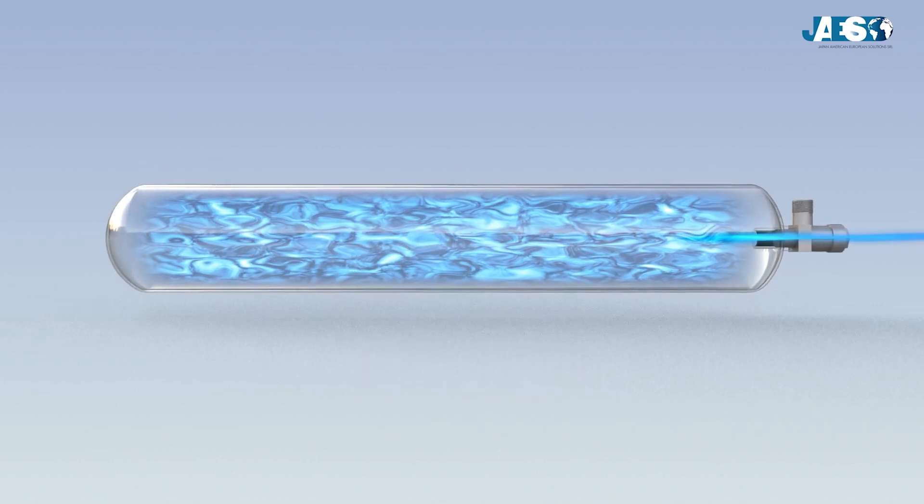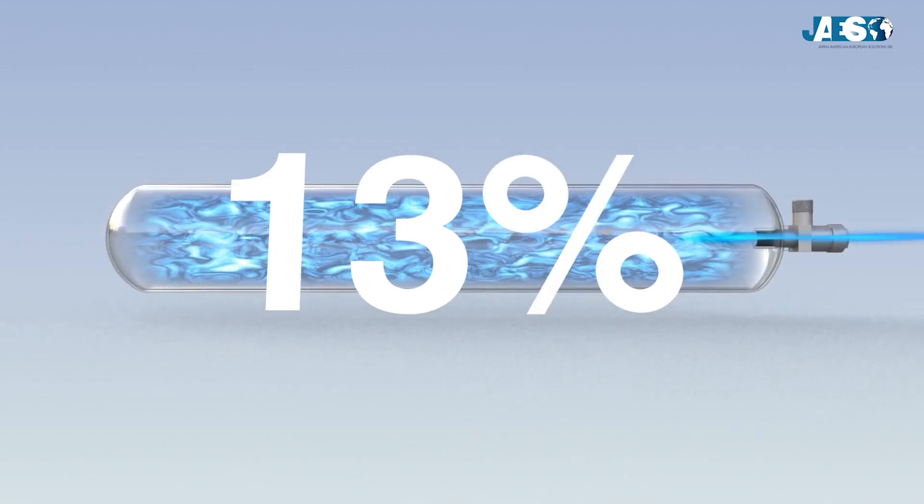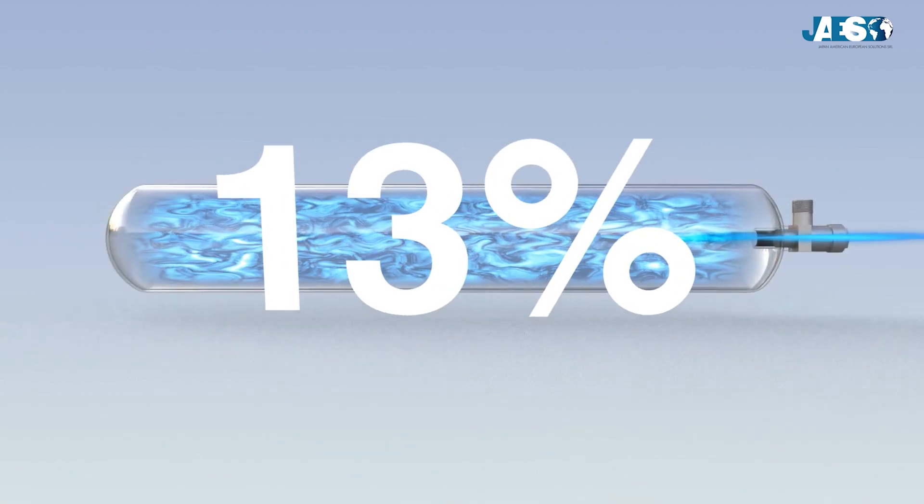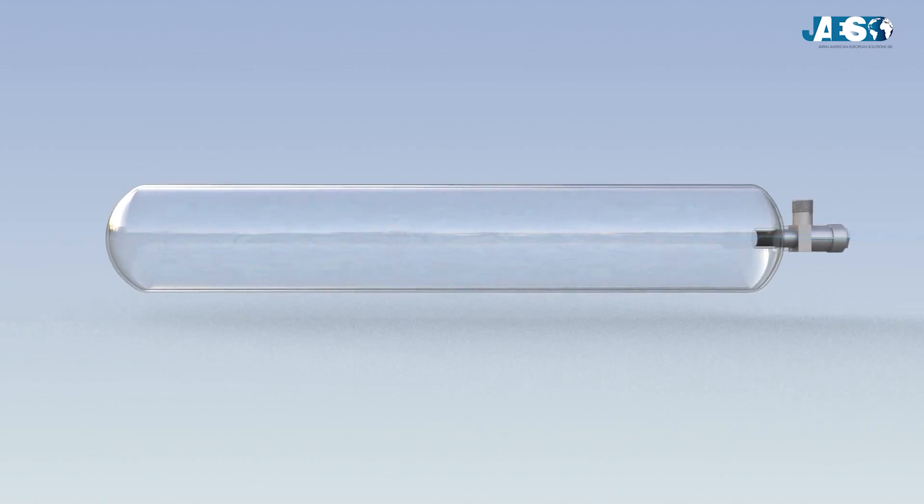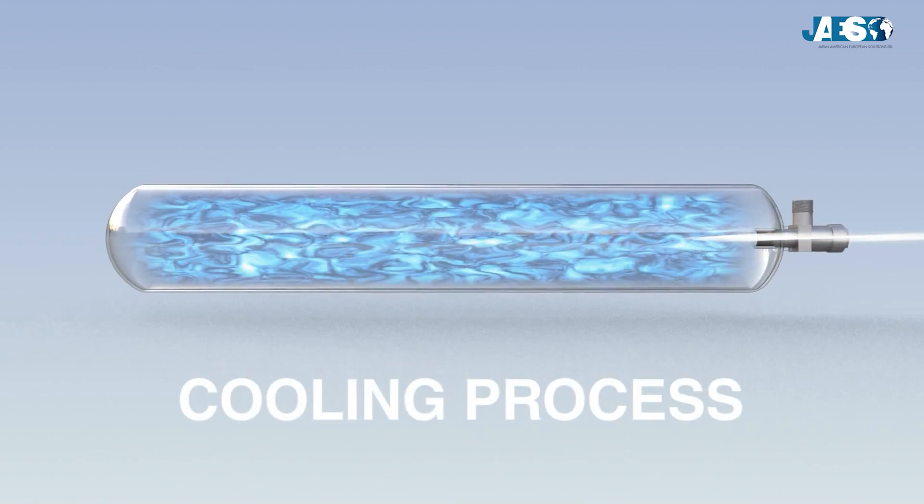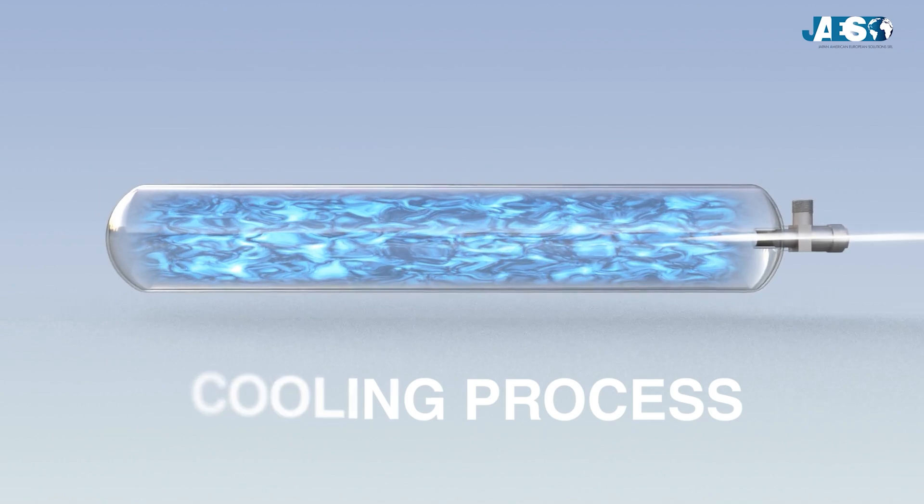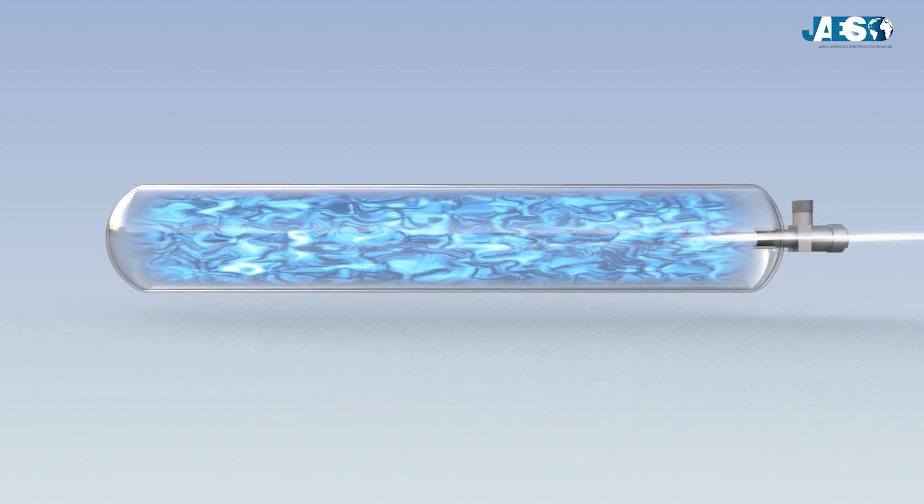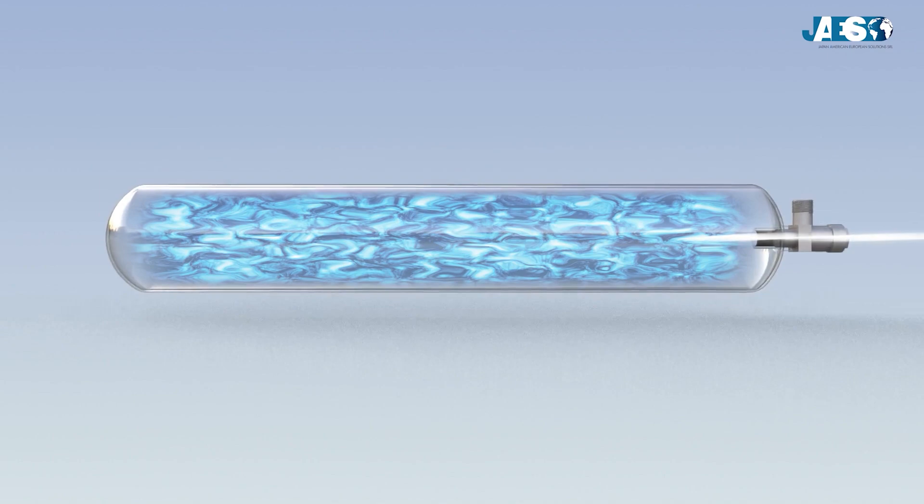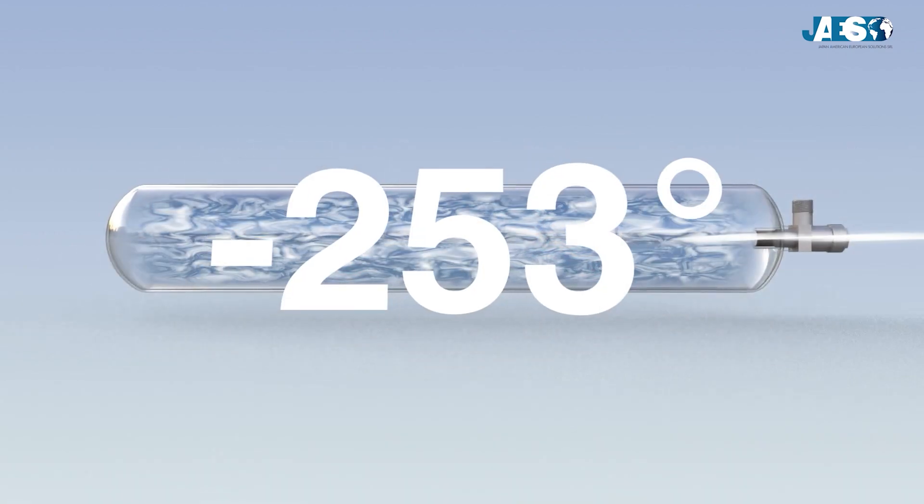Number one: by compressing the element with a force of 790 atmospheres and injecting it into pressurized tanks. However, energetic efficiency decreases by 13 percent. Number two: hydrogen is the most difficult element to liquefy after helium, so it must reach a temperature of minus 253 degrees Celsius.